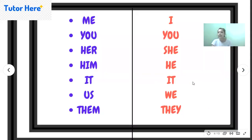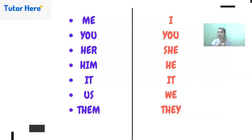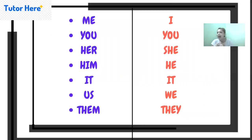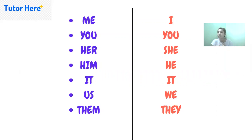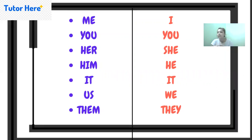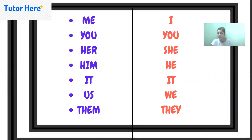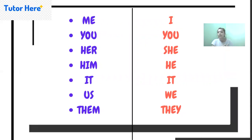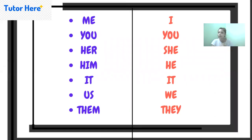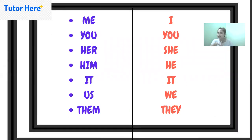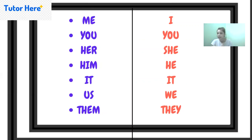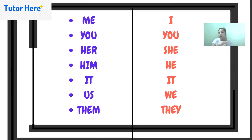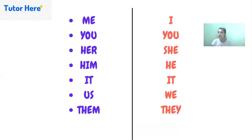Similarly, 'her' in active voice is changed to 'she' in passive voice, and vice versa — if you get 'she' in active voice it becomes 'her' in passive voice. There will be no change in 'you'; it remains the same in passive voice as well. Then for 'him' — if 'him' is in active voice it becomes 'he', and if 'he' is in active voice it becomes 'him' in passive voice.